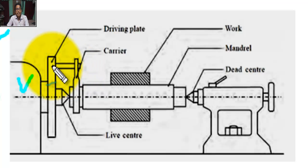This is the diving plate, projected type. This is the lathe dog. This is the mandrel held between live center and dead center. This is the hollow job held within the mandrel.